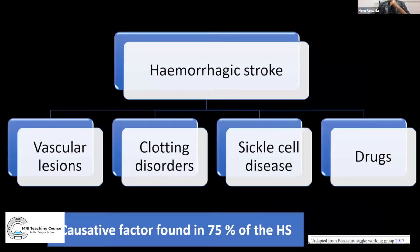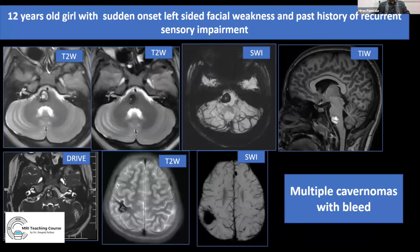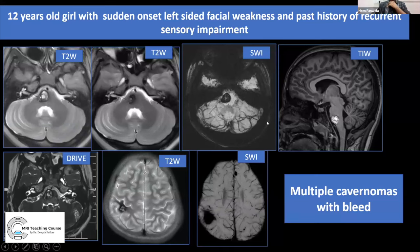Regarding hemorrhagic stroke, vascular lesions, clotting disorders, or drugs can lead to hemorrhagic stroke, with a positive etiology found in up to 75% of cases. One example showed a child presenting with stroke-like symptoms where MRI revealed multiple cavernomas — popcorn-like lesions in the right pons — with chronic hypointense hemosiderin staining indicating repeated bleeding. This caused recurrent sensory impairment involving the postcentral gyrus. Multiple cavernomas are easily diagnosed on MRI.